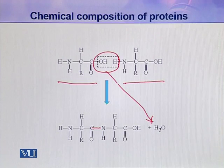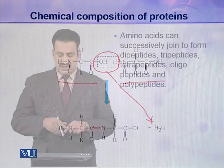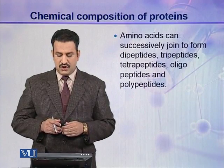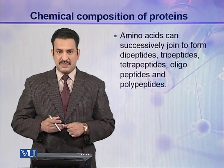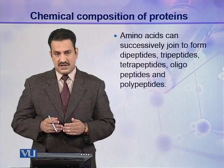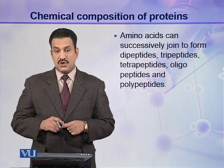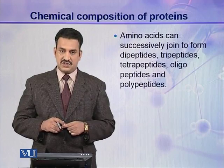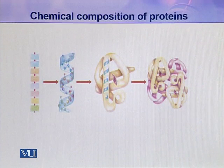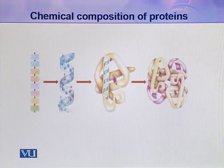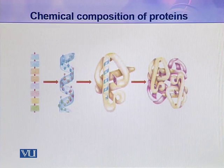In this way, two amino acids join through a peptide linkage, and similarly third, fourth, fifth, and so on amino acids can join to make a long chain. Amino acids can successively join to form dipeptides, tripeptides containing three amino acids, tetrapeptides containing four, oligopeptides containing a few, and polypeptides containing many amino acids. However, a polypeptide chain is not yet a protein — it requires some conformational organization to be transformed into a protein molecule.